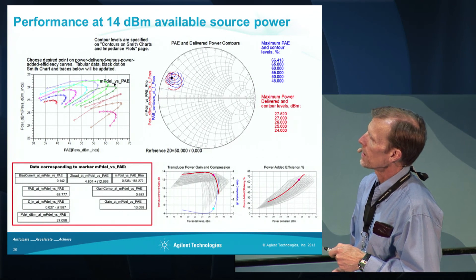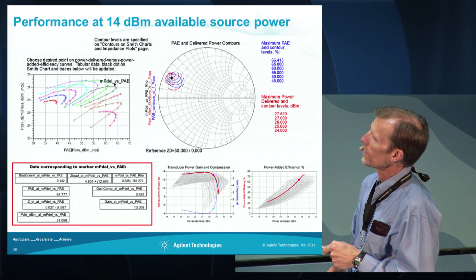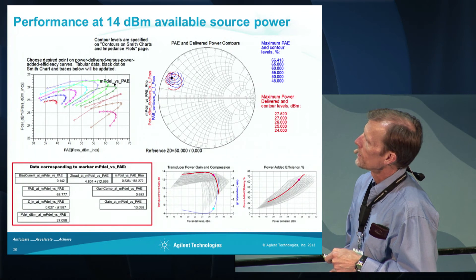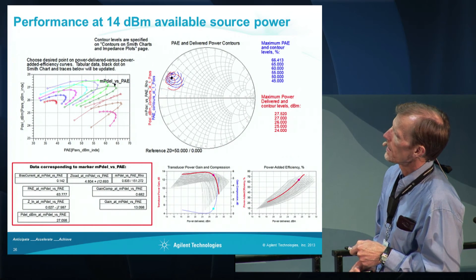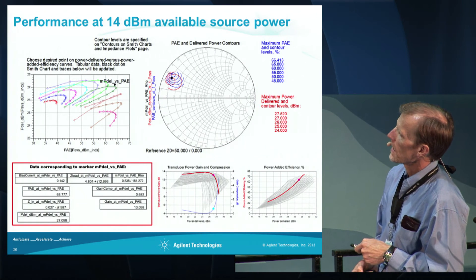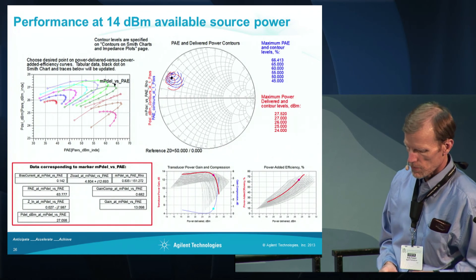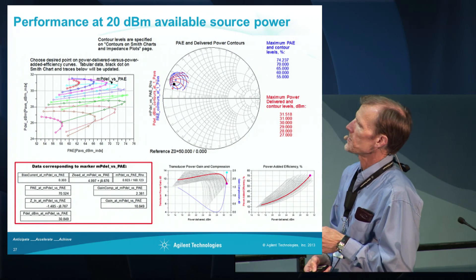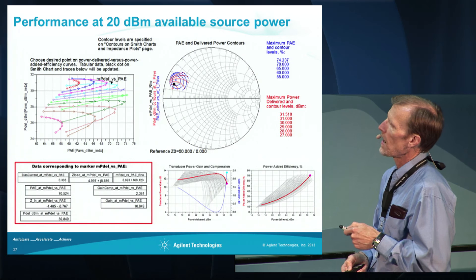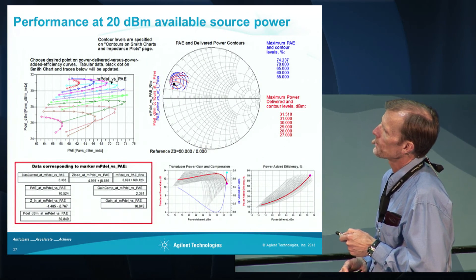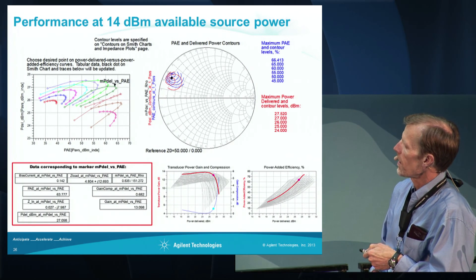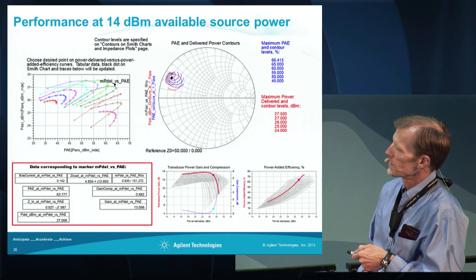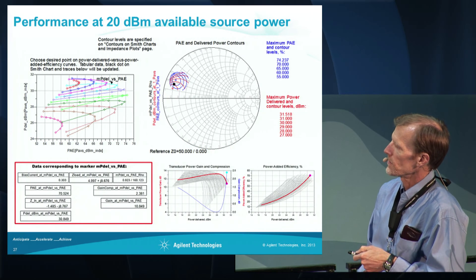We're selecting a particular point between power delivered and power added efficiency — so we're making a trade-off between the two. Typically you choose a point kind of along this arc, and this is the load that corresponds to this point. The red is the transducer power gain and power added efficiency that you get if we use that load for all input powers. This is the same data, but now we're looking at performance at 20 dBm available source power. We've chosen a slightly different load. We get better performance at higher output power, but performance at lower output power is worse — so there's a definite trade-off, and you'll get different results if you match for a lower input power versus a higher input power.